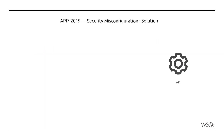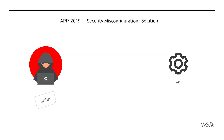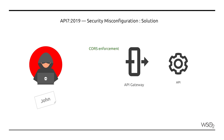An API gateway can act as the secure interface to your API, allowing you to centrally enforce security. It can be used to enforce CORS policies, HTTP transport, and do customized error handling. Also, securing the centralized servers that run the API gateway is much easier than securing multiple API servers.